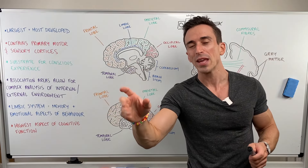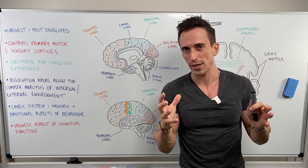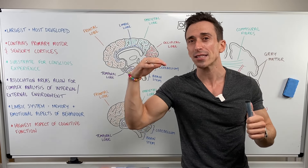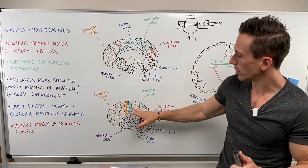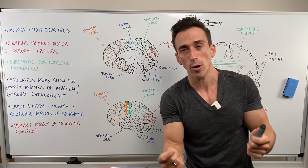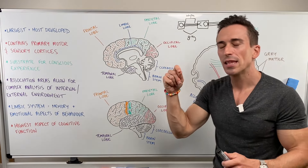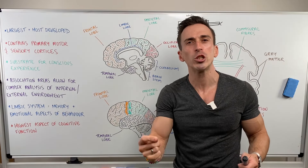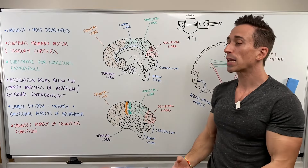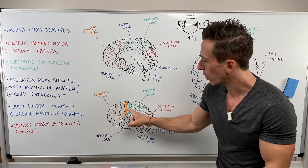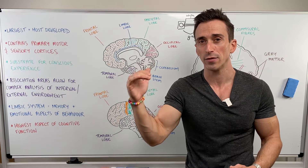When we look at the primary motor and sensory cortices within the cerebral hemispheres, this is the highest level of activity. The primary motor cortex sits in the frontal lobe — this is where we initiate voluntary or conscious motor movement. If I want to begin walking, this is where it begins. That's why it's the highest level at which motor activity functions.